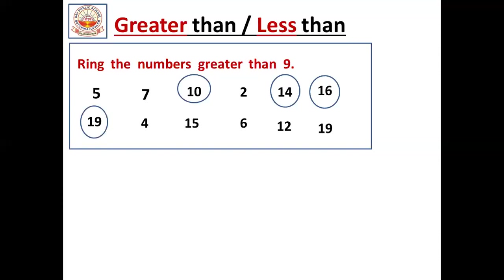Now 4. Is 4 a big number or small number compared to 9? It is a small number, so we should not circle it. Now 12. Is 12 a big number or small number compared to 9? 12 is a big number — 12 is greater than 9, so we should circle it. Now 19. 19 is a big number — 19 is greater than 9, so we should circle 19.